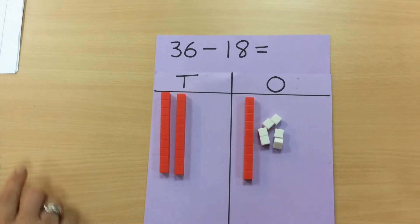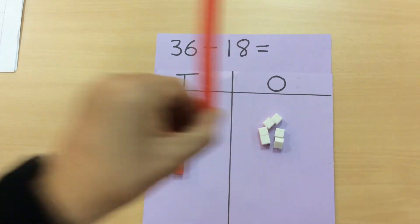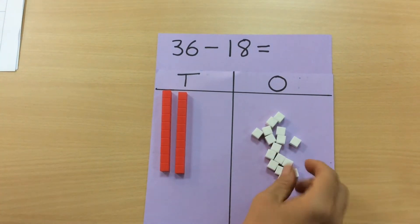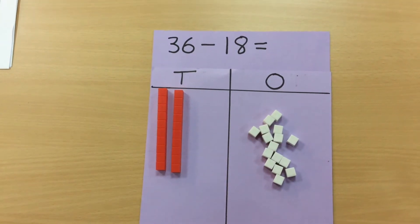It is still in the form of a ten, so to make it easier for them they exchange. So they take away the one ten and add the ten ones. This now means that they can physically take away the eight.